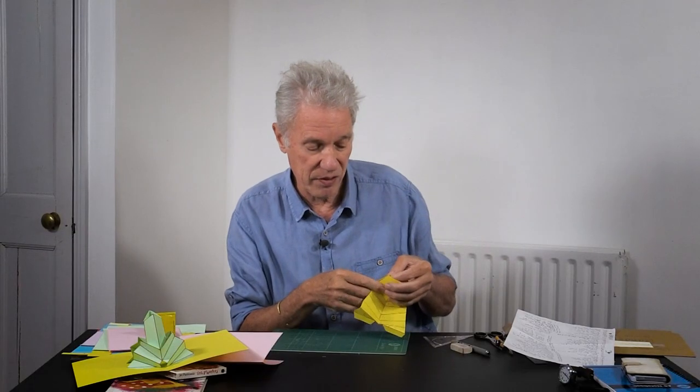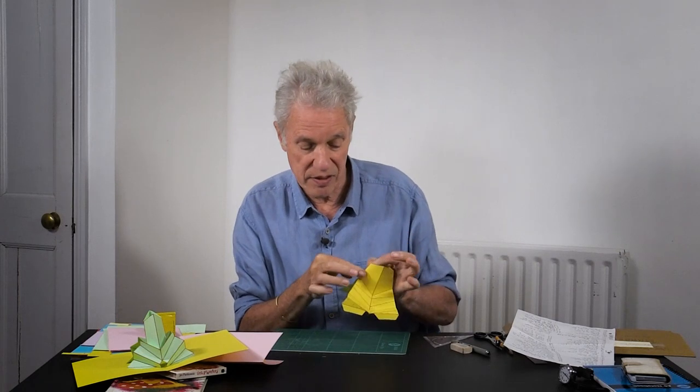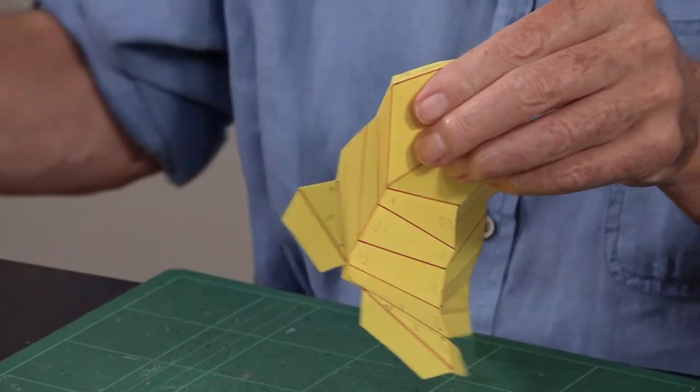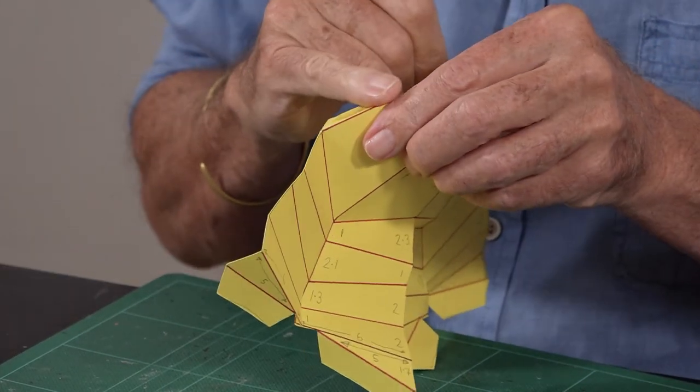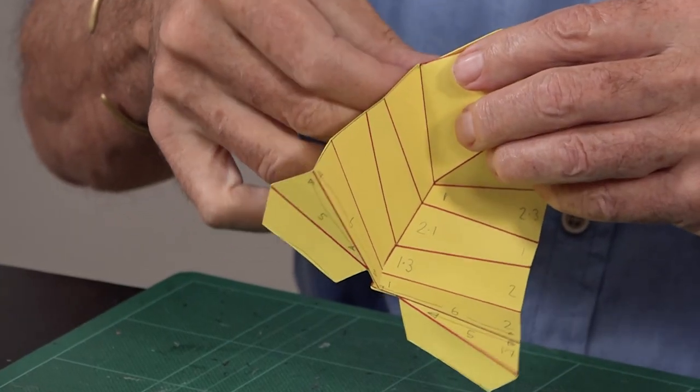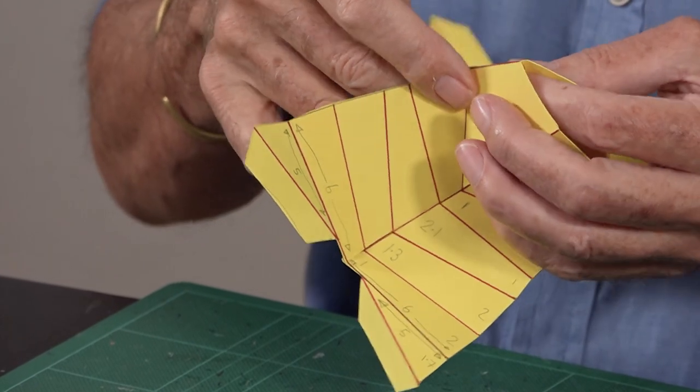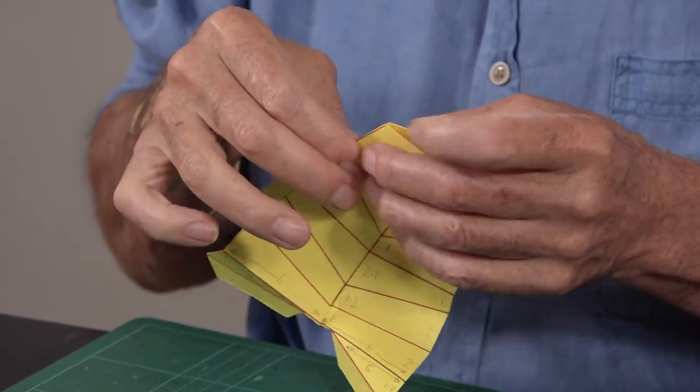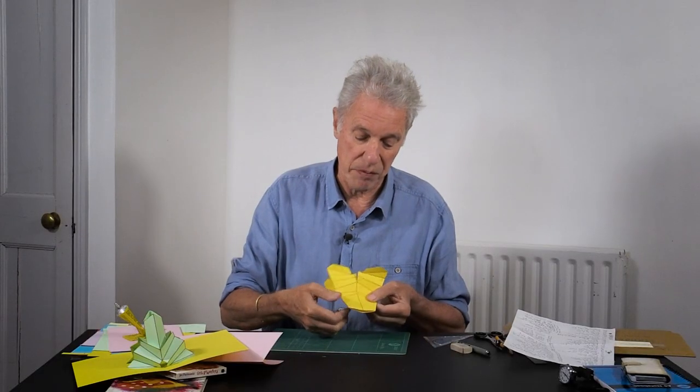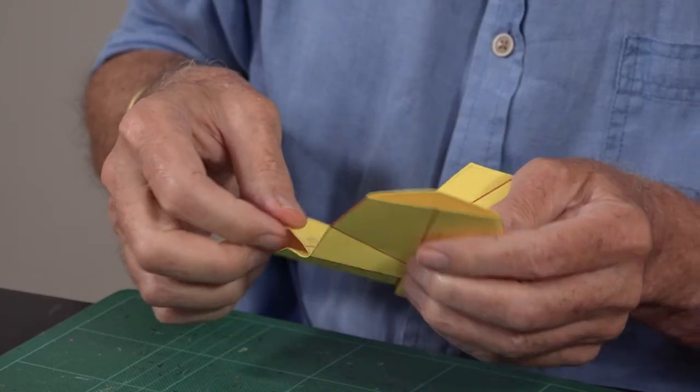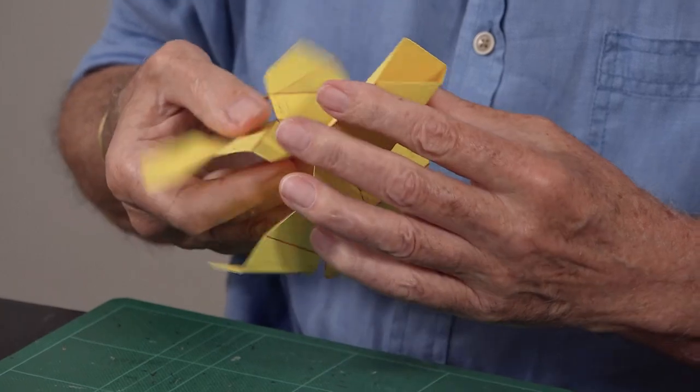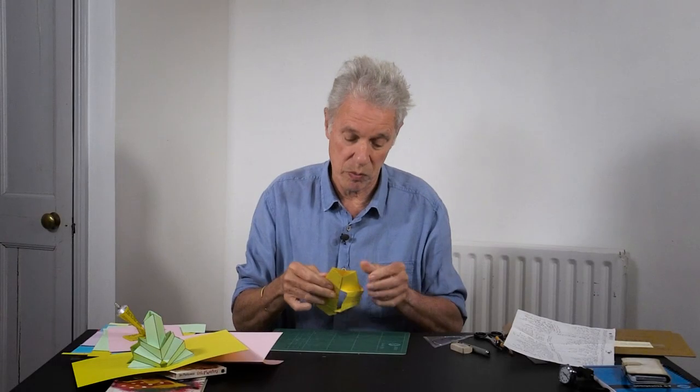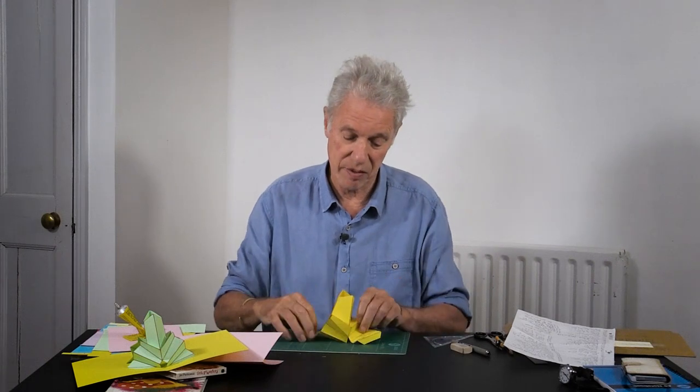So first, glue the whole thing into the circular structure. It should be able to go flat when you're gluing it, just to make sure that it will ultimately go flat when it's on the page. So it should go flat both ways as it's a completely symmetrical structure.